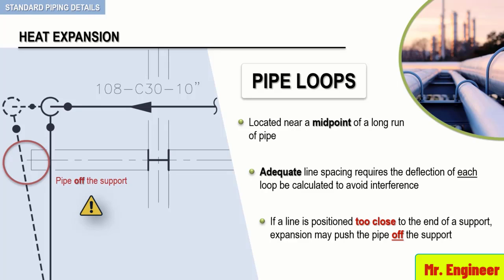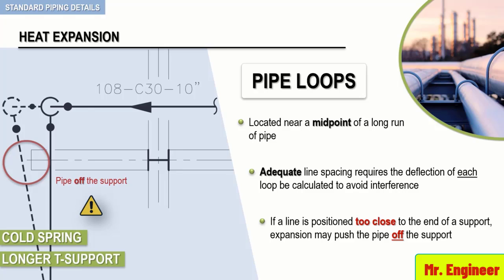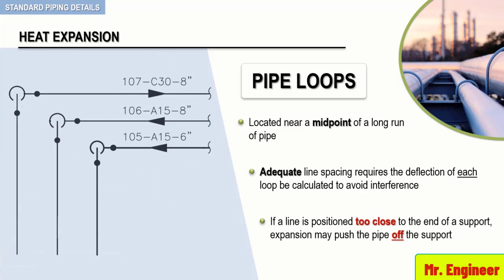Situations like this may require a cold spring or a longer T-support. Now, when multiple lines resting adjacent to one another turn in the same direction, attention must be given to the fact that one line can grow while the other does not. If lines 105 and 106 are both expanding at the same rate and in the same direction, as they both grow, adequate line spacing will be maintained.